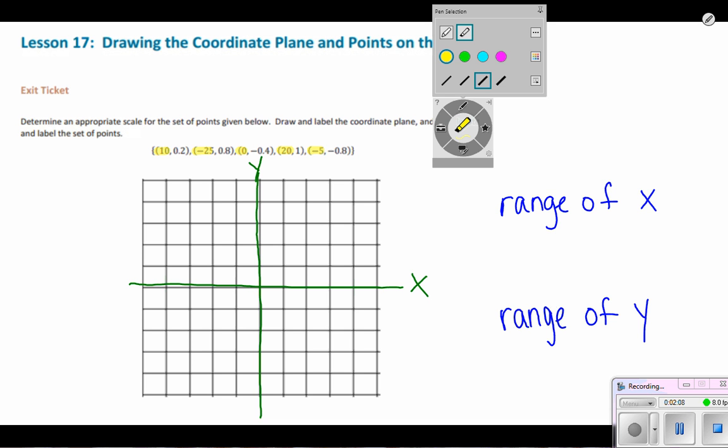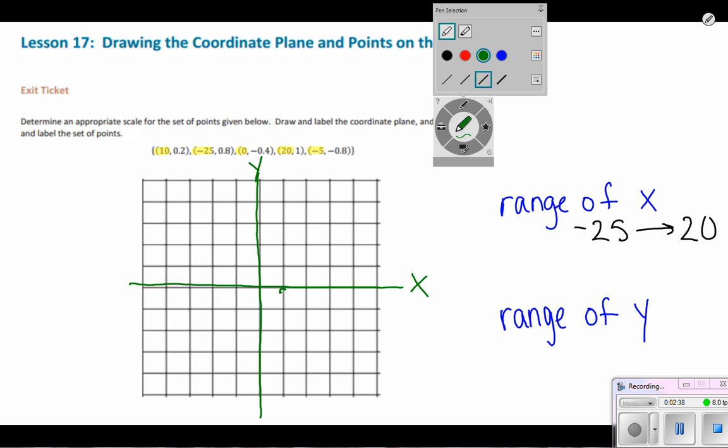So my smallest value is actually negative 25. And that range goes through my highest value. It looks like it's going to be 20. So I want to make sure that I have enough points that's going to cover negative 25 and 20. So since I have five spaces to the left and to the right, I think that what I'm going to do is I'm going to set my scale up so that each unit is going to be worth 5.